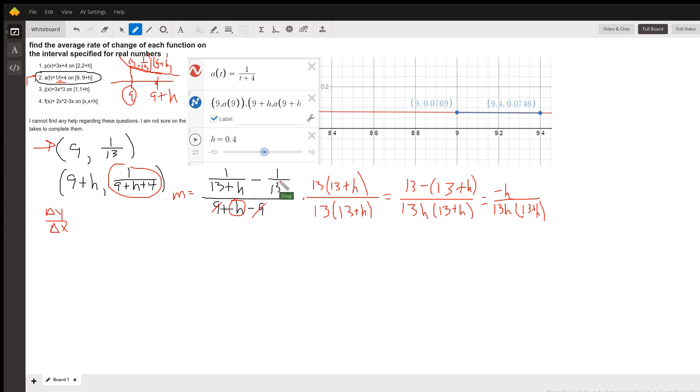and I just get this 13 minus... the 13 cancels out, and I get minus the quantity (13 plus h). In the denominator, I get this h times this LCD.